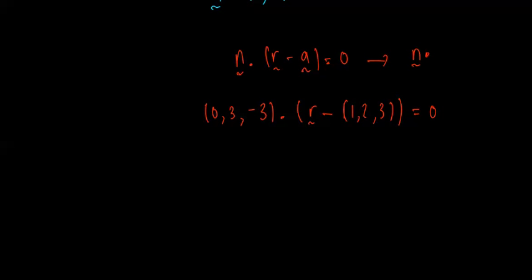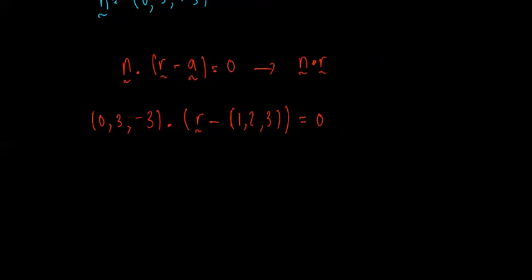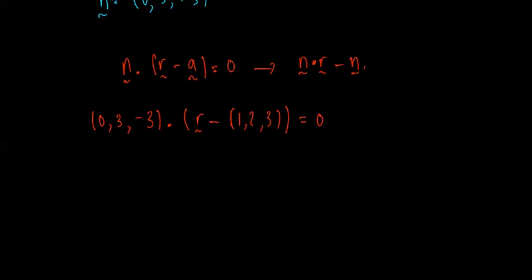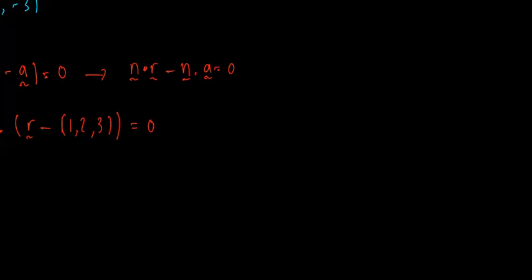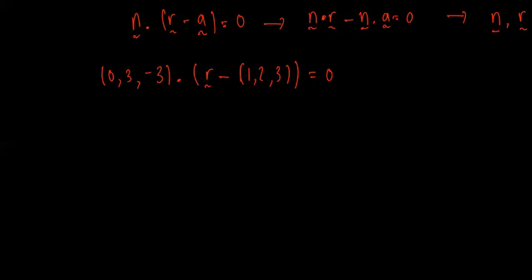This could be n dotted with r minus n dotted with a equal to 0, which we can rewrite as n dotted with r has to equal n dotted with a. Just bringing that to that side, to the right-hand side. So, rewriting it like that, (0, 3, -3) dotted with r is equal to (0, 3, -3) dotted with (1,2,3).